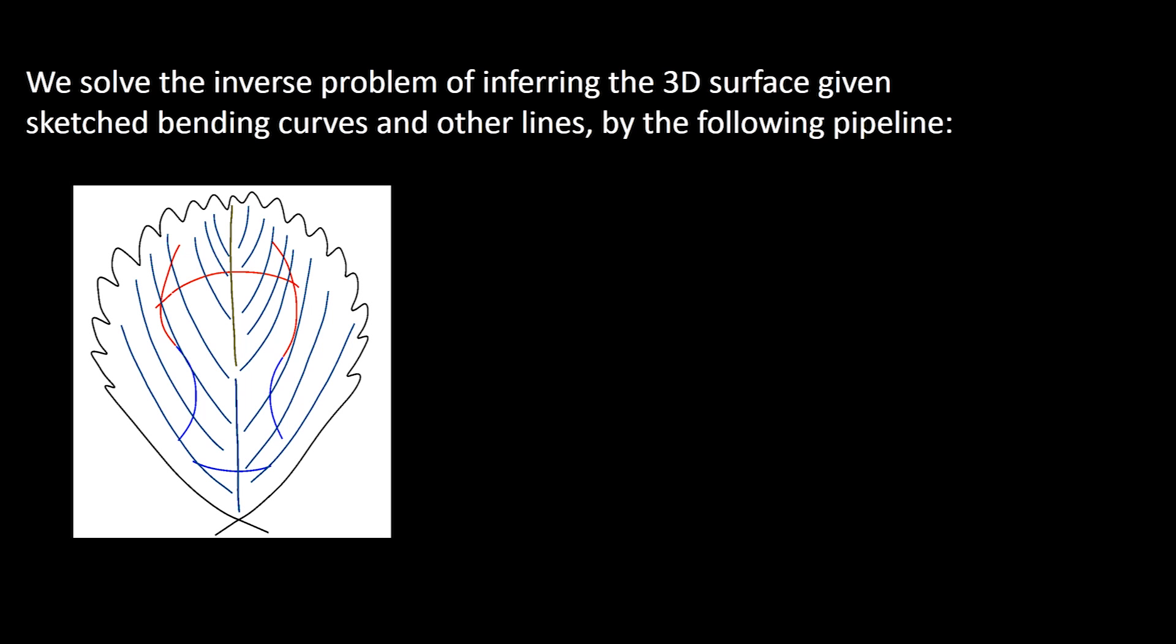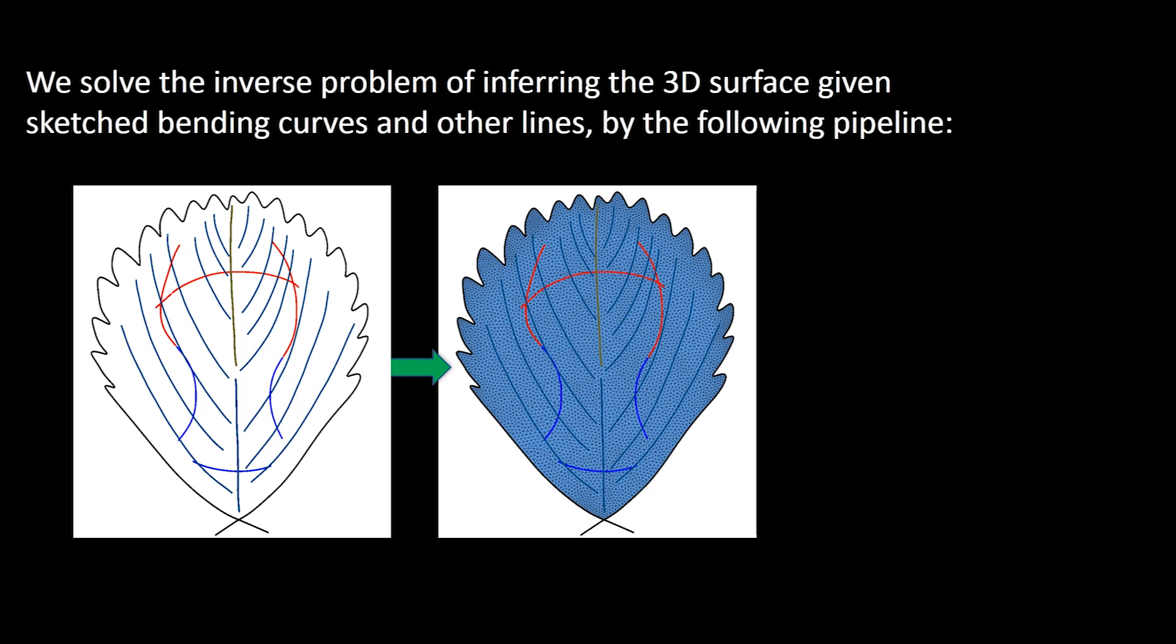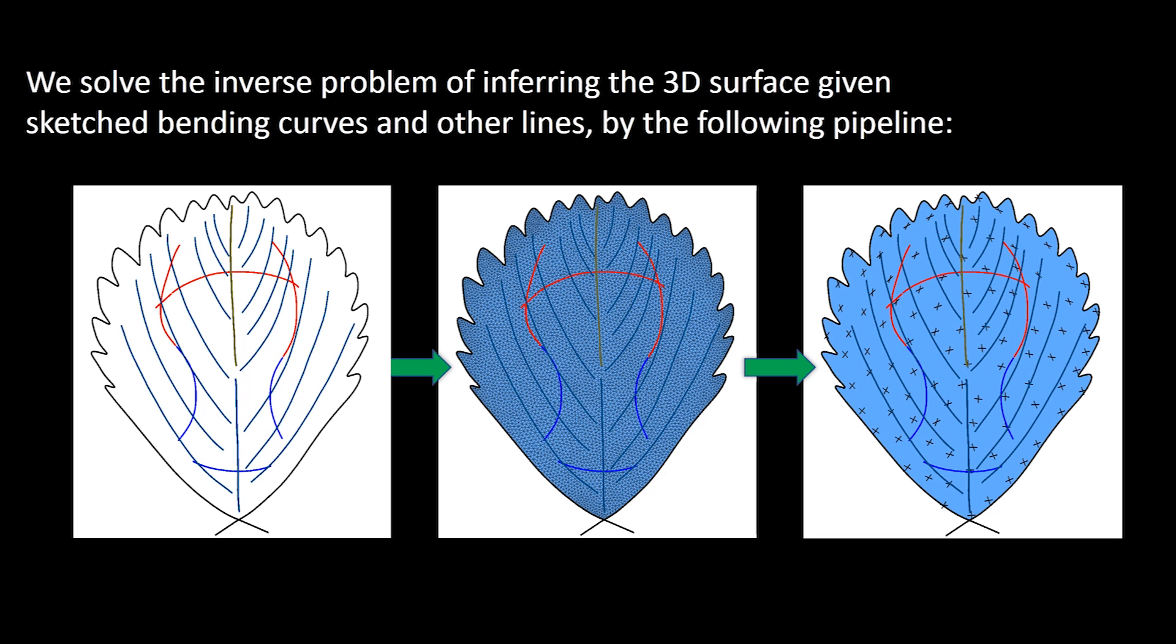First, the user sketches the 2D lines. The algorithm then parses the strokes to label them as representing convex or concave regions of the final 3D surface. Then the 2D domain is created and triangulated for computation. On the mesh domain, we build a smoothly varying curvature direction field that complies with the stroke directions.